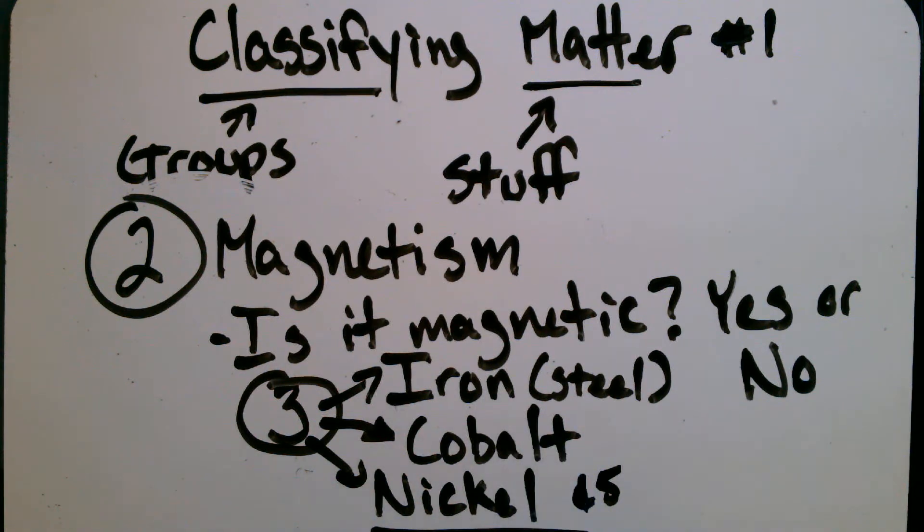But iron, cobalt, and nickel are the only three magnetic metals. And when you do your lab work this week, you're going to see that there are other metals, yes. But they're not magnetic. Only iron, cobalt, and nickel are. Make sure this is down in your notes as well.